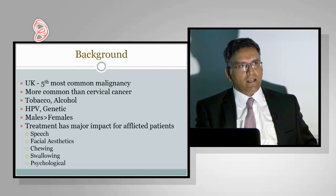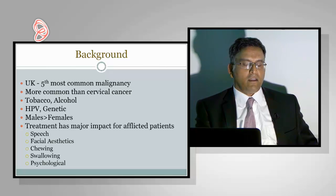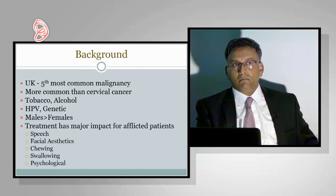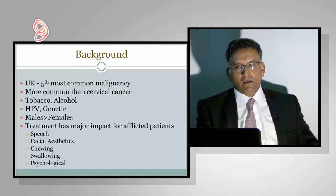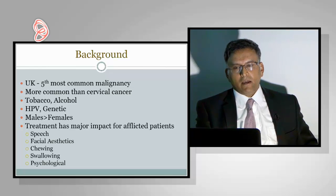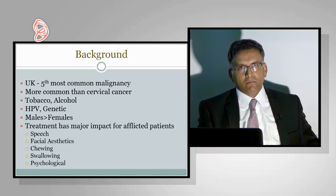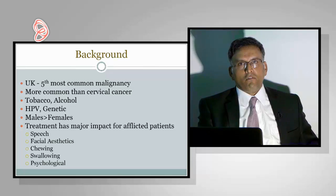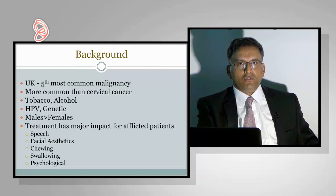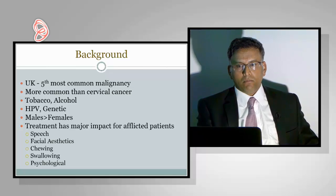Head and neck cancer in the United Kingdom is actually the fifth most common malignancy, and unlike other cancers, there is no effective screening measure in the UK or around the world. It is more common than cervical cancer, yet there is a huge cervical cancer screening program in the UK. In the United Kingdom, we have around 6,000 new cases per year, while cervical cancer accounts for only about 2,500 to 3,000. The usual suspects are tobacco and alcohol, and new evidence is suggesting HPV and some smaller genetic links. Males are more affected than females, but this is changing due to habits within the female population with smoking and drinking, and it is now becoming more equal amongst the sexes.